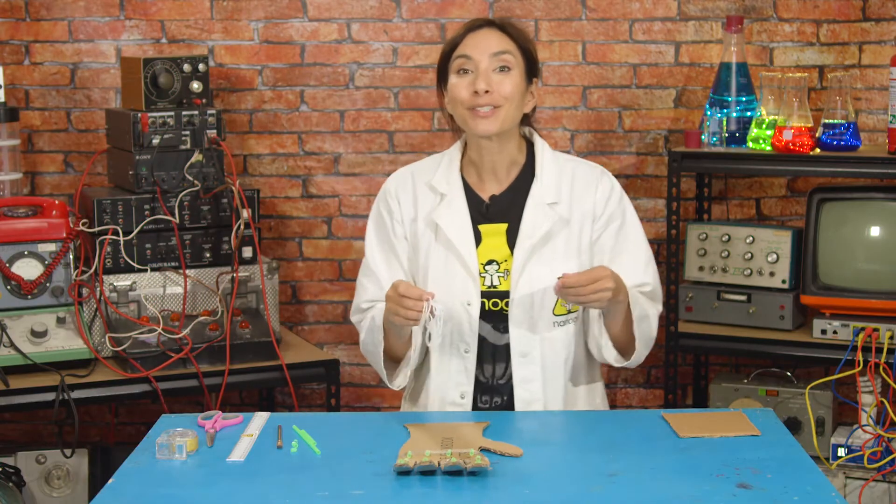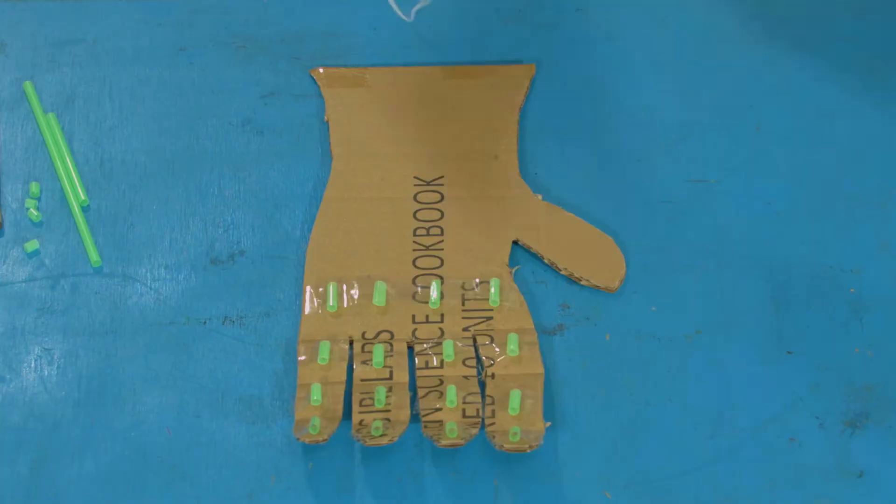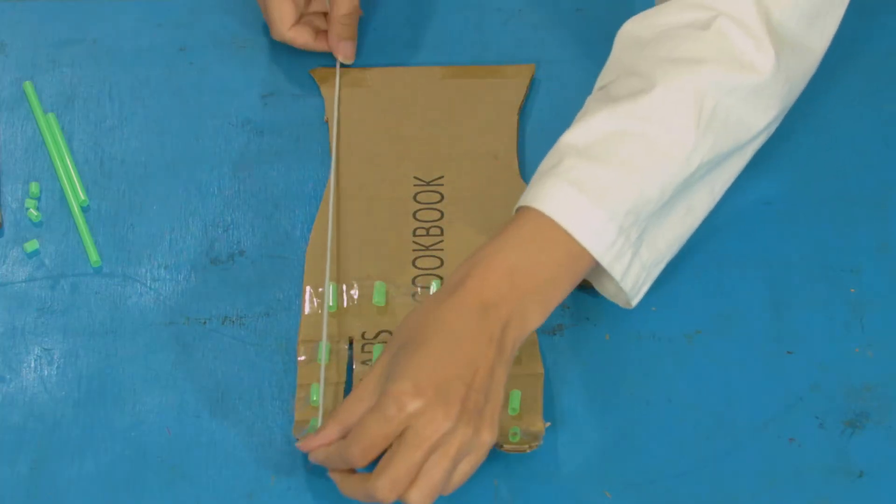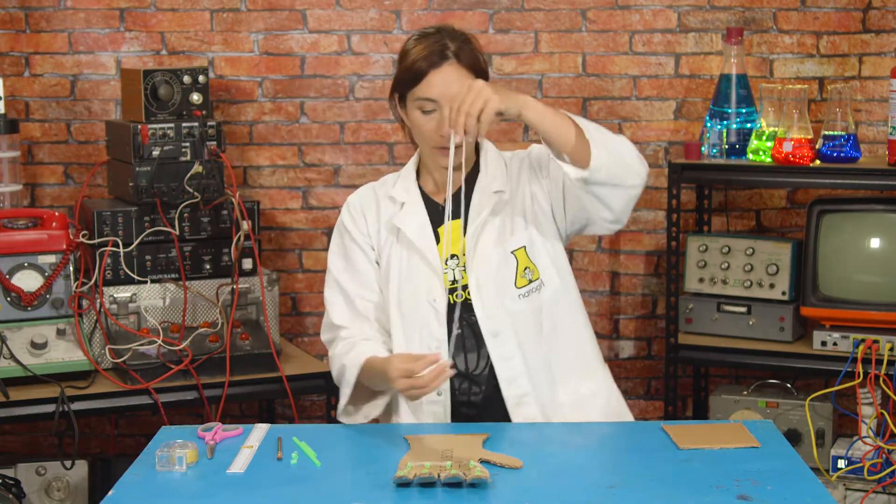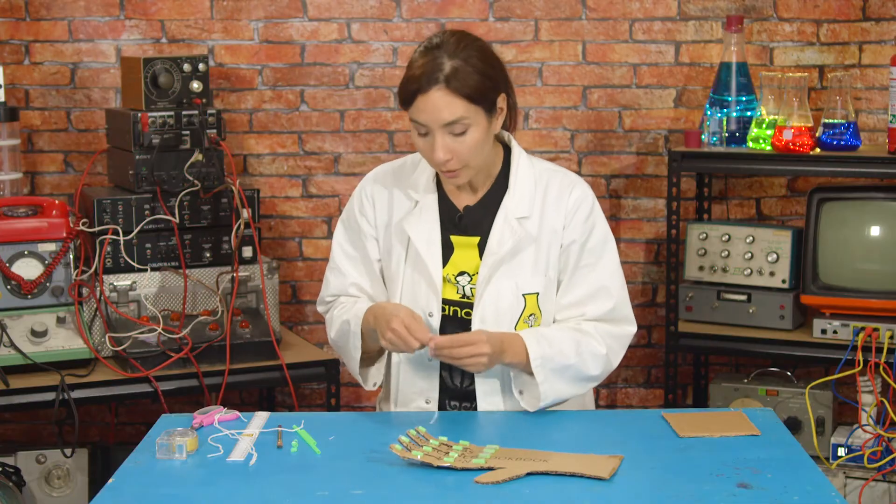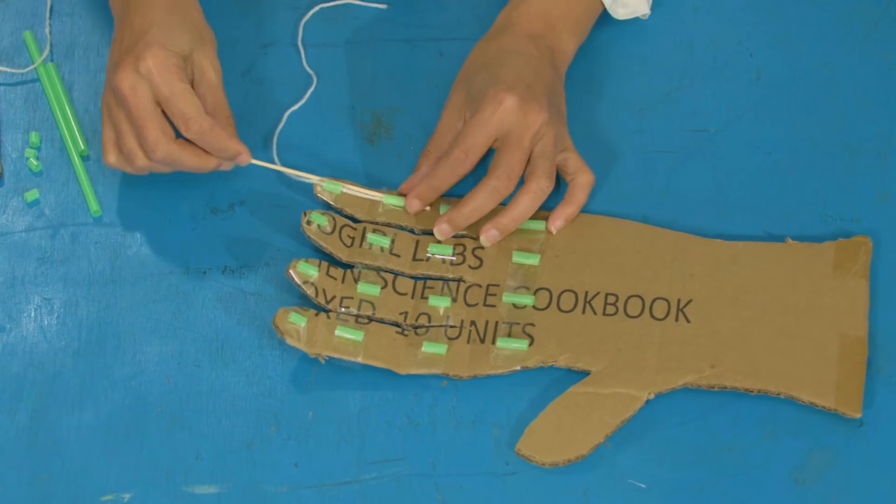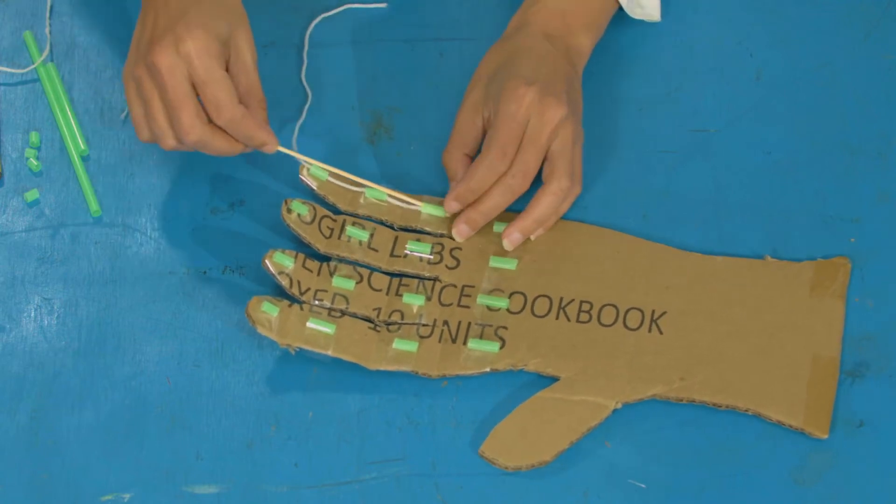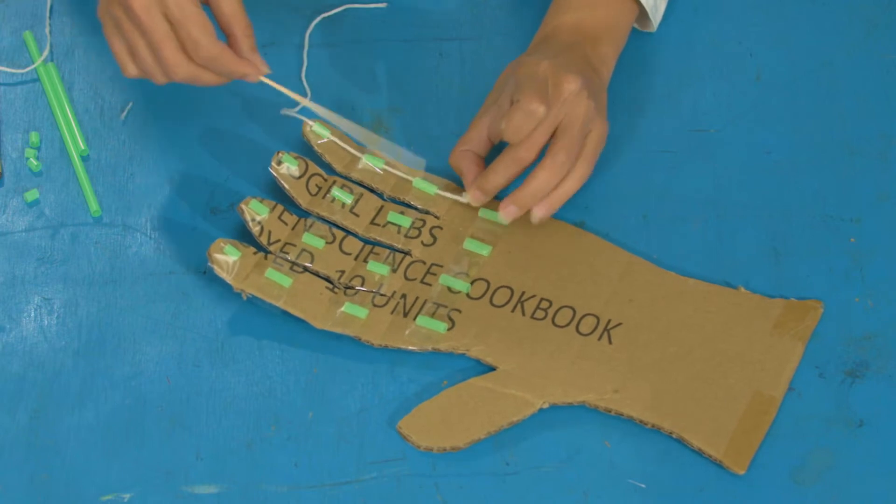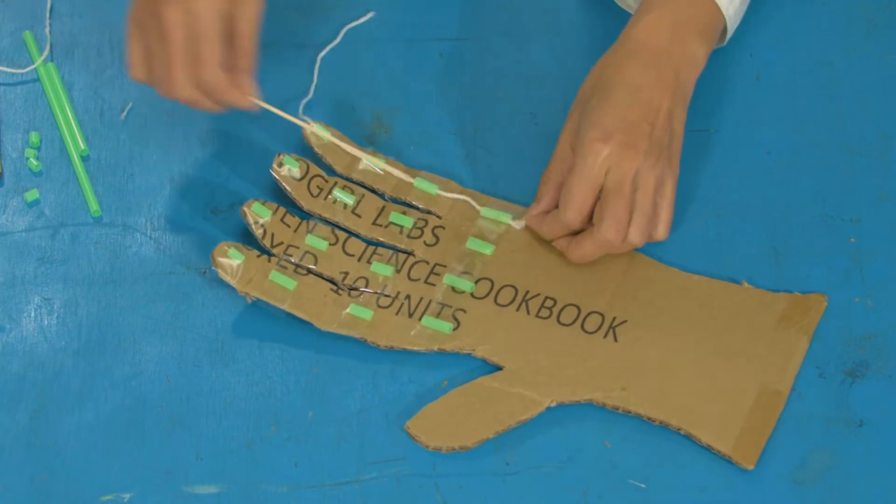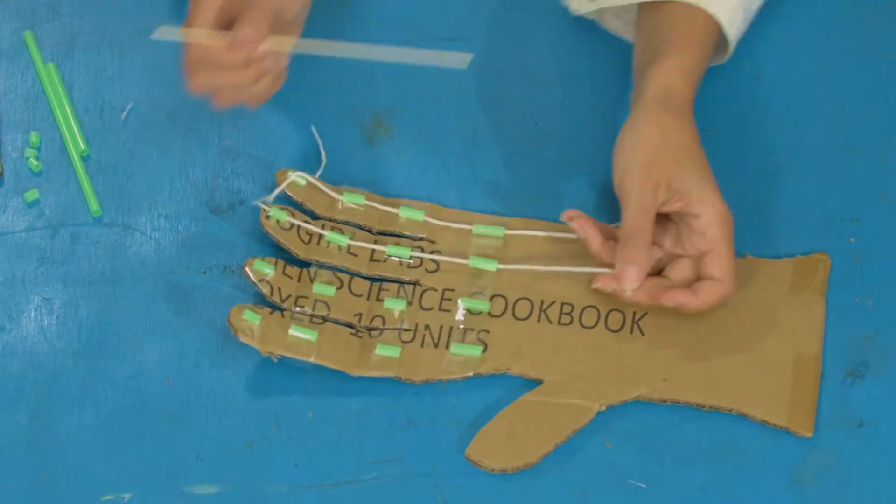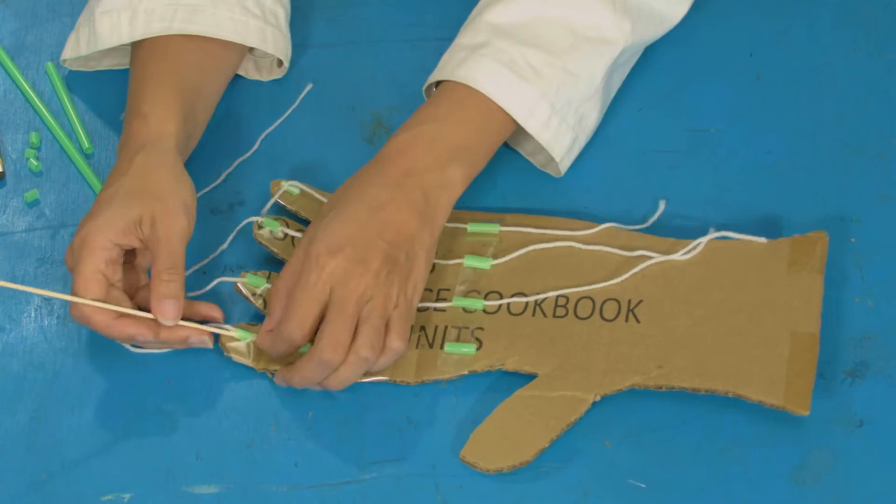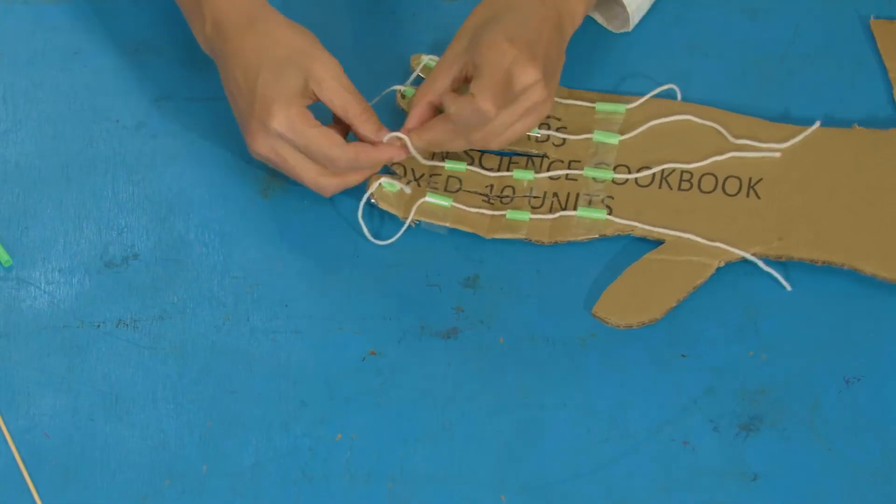Next, you're going to cut four lengths of string that are long enough to reach from the tip of the finger to the bottom of the hand like that. So one, two, three, four. So now you're going to thread one piece of string through the straw for one finger. I actually find if you've got a wooden skewer, it just helps to poke them through. There you go. When you get to the end, you're going to tie a knot in the top here, and do that for each finger. There we go. All tied on.